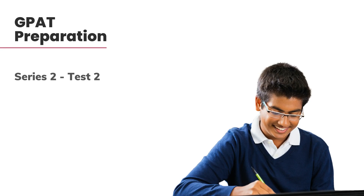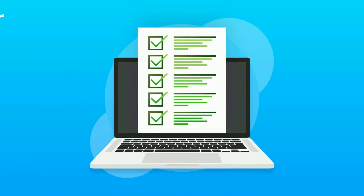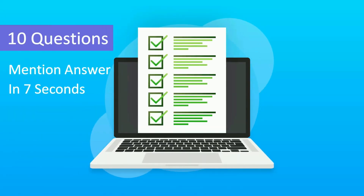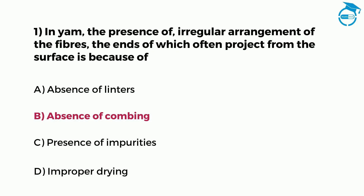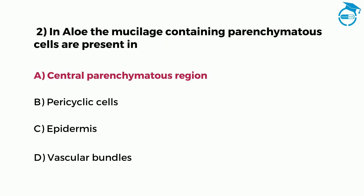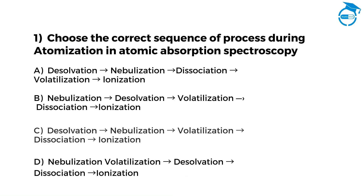Before we start the test, let us understand the process. This test consists of 10 questions and you will get 7 seconds to write your answer in the comments. For example, if the answer to question 1 is option B, you can write in the comments 1B. Similarly, if the answer to question 2 is option A, you can write in the comments 2A.